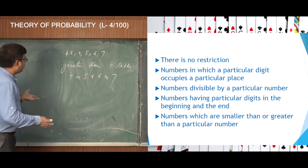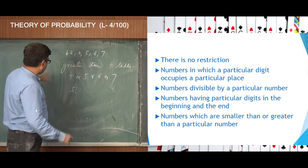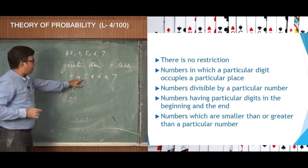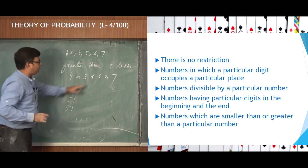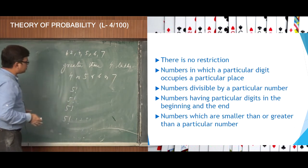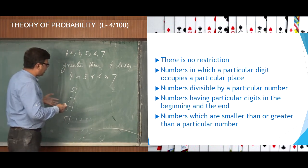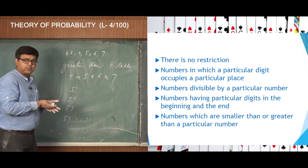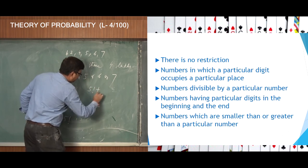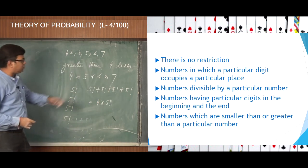If you fix any one of them — say 4 — the remaining 5 digits can arrange among themselves in 5 factorial ways. Similarly, 5 factorial ways when 5 occupies the lakhs position, 5 factorial when 6 occupies it, and 5 factorial when 7 occupies it. In all these cases, the numbers formed with these 6 digits will be greater than 4 lakhs. It is an OR rule, so the total number of such numbers is 5 factorial + 5 factorial + 5 factorial + 5 factorial = 4 × 5 factorial.